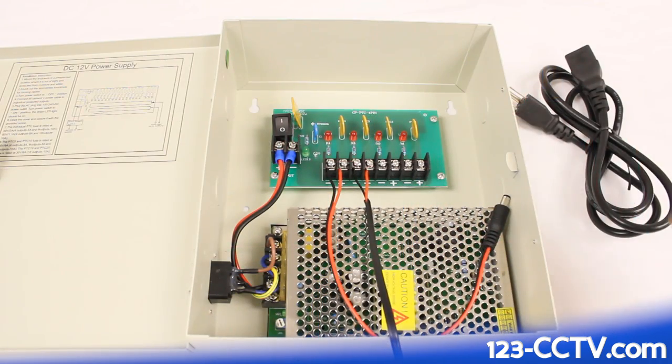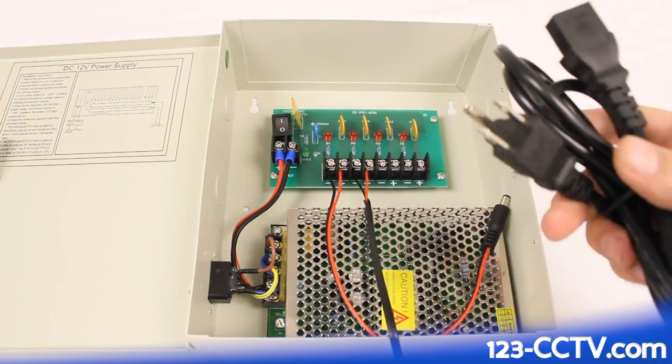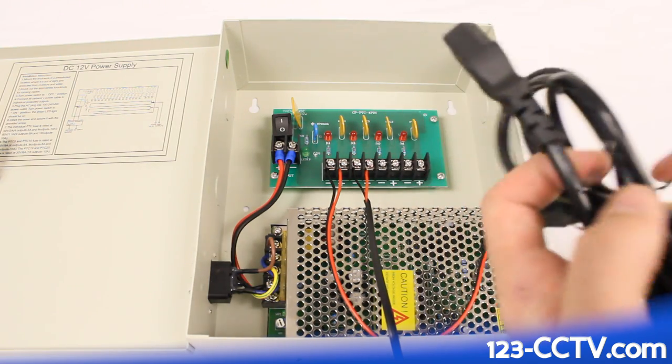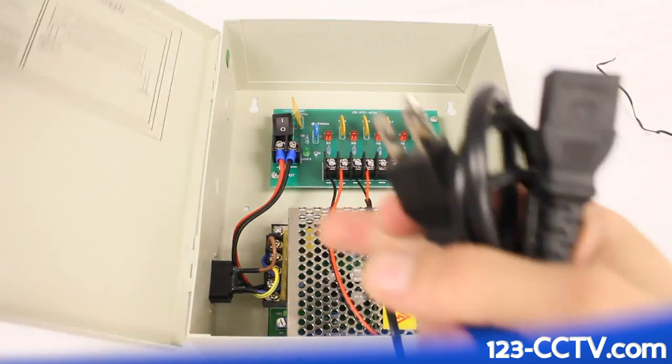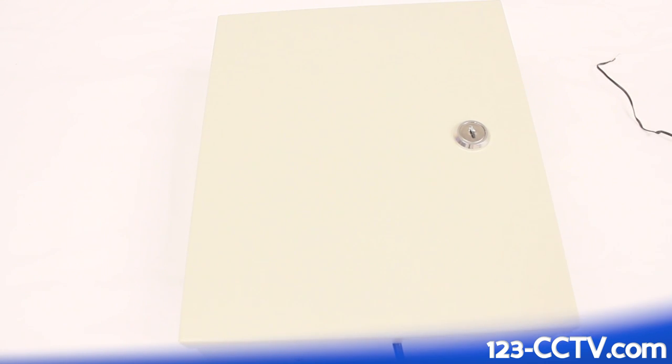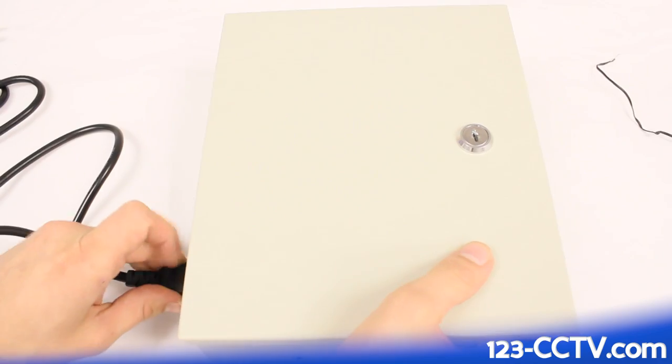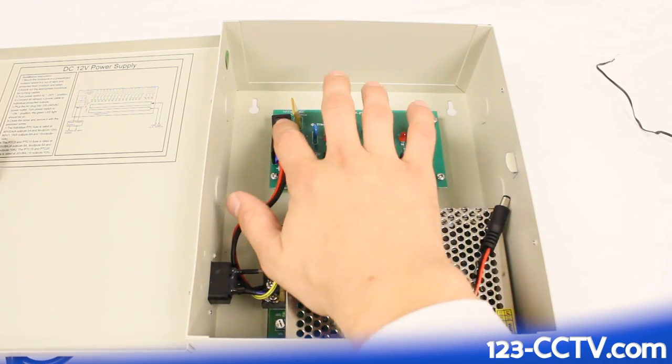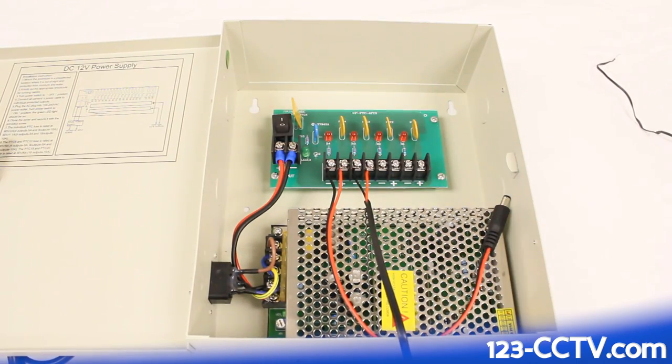We can go ahead now and take our power plug, put that into the side of the box. After we plug this into the wall, all we have to do is switch this on and you'll have power to your system.